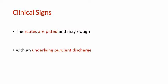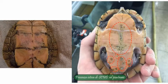Coming to the clinical signs, the scutes are pitted and may slough with an underlying purulent discharge. These are the shells of SCUD-infected turtles — you can see the pitted scutes here. They may slough later and there will be underlying purulent discharge. Other clinical signs are anorexia and lethargy.